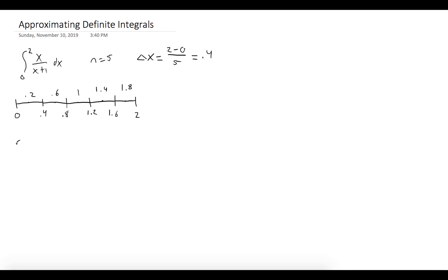And so our approximation for the integral from zero to two of x over x plus one dx is what we sum over all the rectangles. So from i equals one to five of the function evaluated at each of the midpoints.